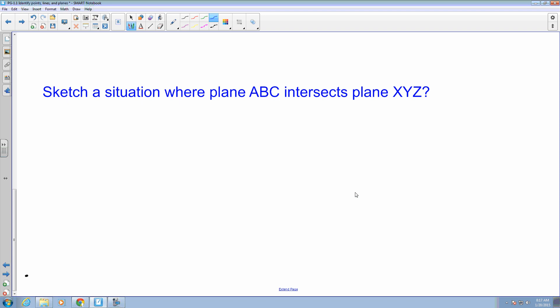And finally, they want us to sketch a situation where plane ABC intersects plane XYZ. Okay, so pretty similar to what we have on the top for example, we are looking at drawing planes. Remember, planes are represented as parallelograms, so I am going to make a parallelogram here. Let's identify the points, so I got ABC, so all those points are on plane ABC. And then I am going to intersect by making another parallelogram, and then I am also going to represent the hidden lines.